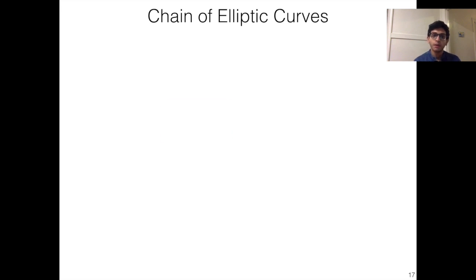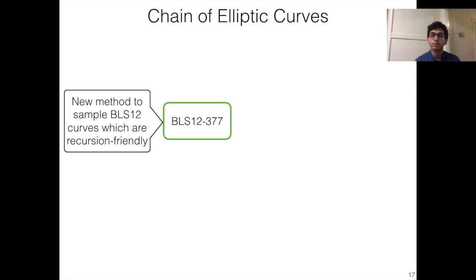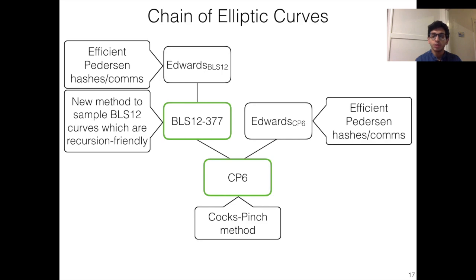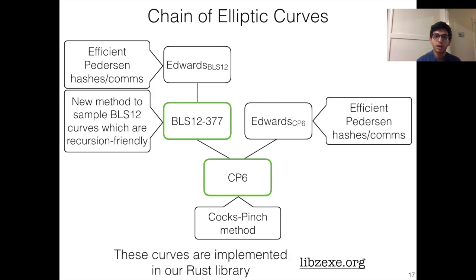In more detail, we first demonstrate a new method for sampling recursion-friendly BLS12 pairing-friendly curves. And then we construct a new curve CP6 via the Cox-Pinch method, which allows us to verify predicate proofs that are created over BLS12-377. Next, we also construct special Edwards curves that allow us to efficiently implement pairs and hashes and commitments over both the BLS12 and CP6 curves. All of these curves are implemented in our Rust library, which is available at libzexy.org. Now, these efficient implementations allow us to achieve the excellent transaction size and verification time numbers that I reported earlier.